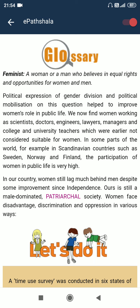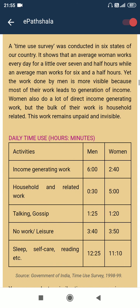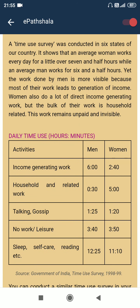In our country, women still lag far behind men, despite some improvements since independence. Ours is still called a male-dominated political society. Women face disadvantage, discrimination and oppression in various ways. A time-use survey conducted in six states shows that an average woman works every day for a little over seven and a half hours, while the average man works for six and a half hours. Yet the work done by men is more visible because most of their work leads to generation of income. Women also do a lot of direct income-generating work, but the bulk of their work is household-related and remains unpaid and invisible.